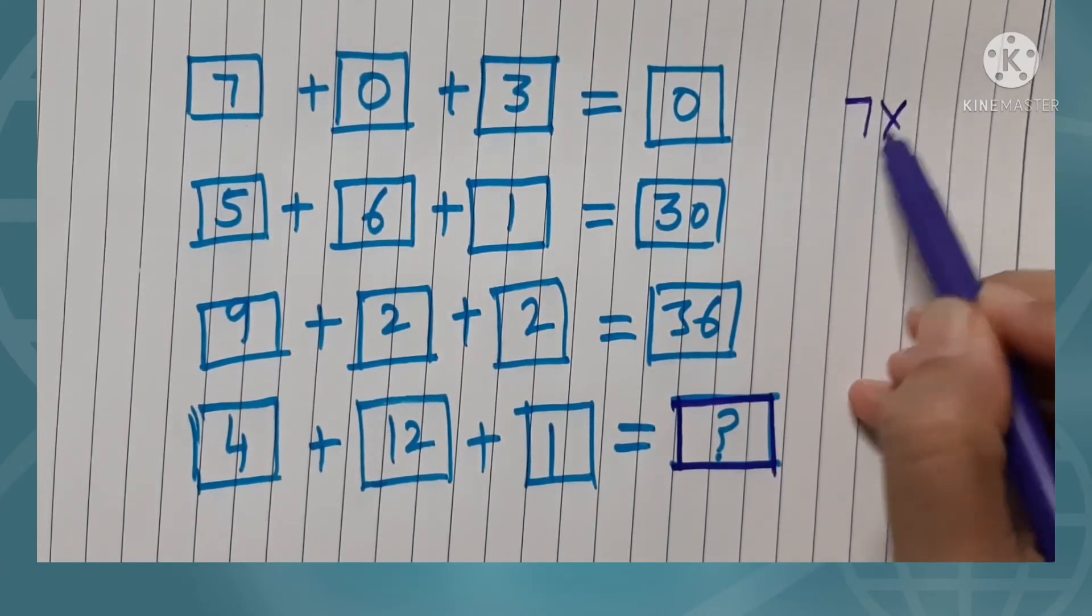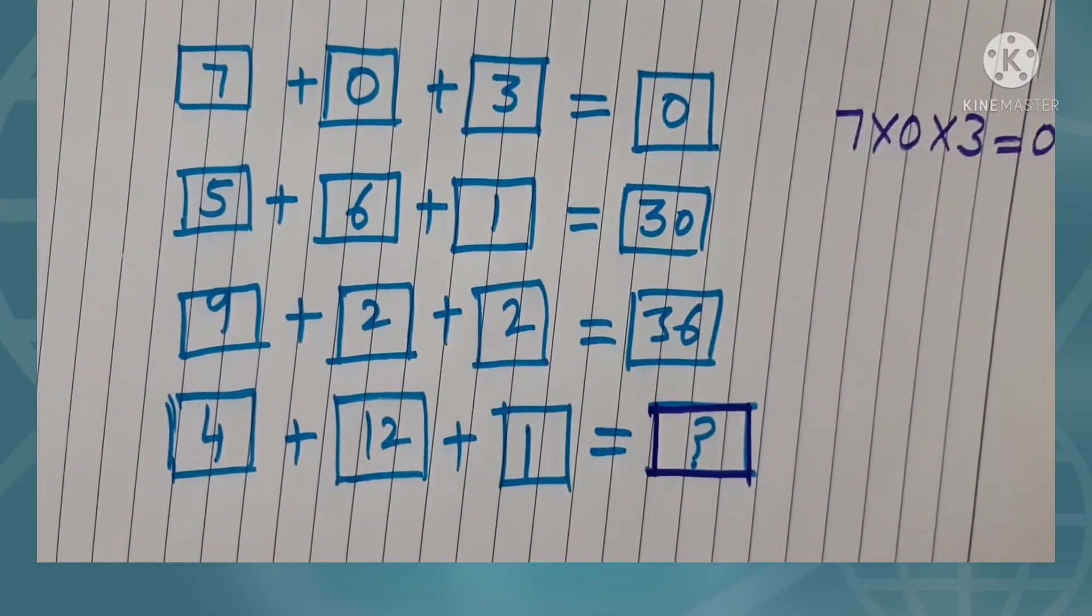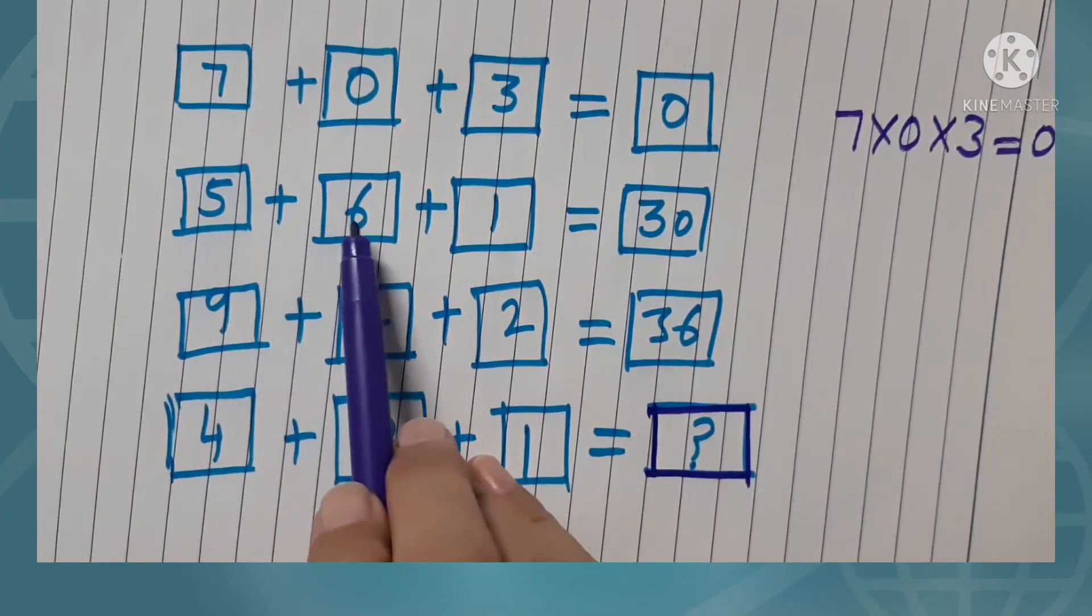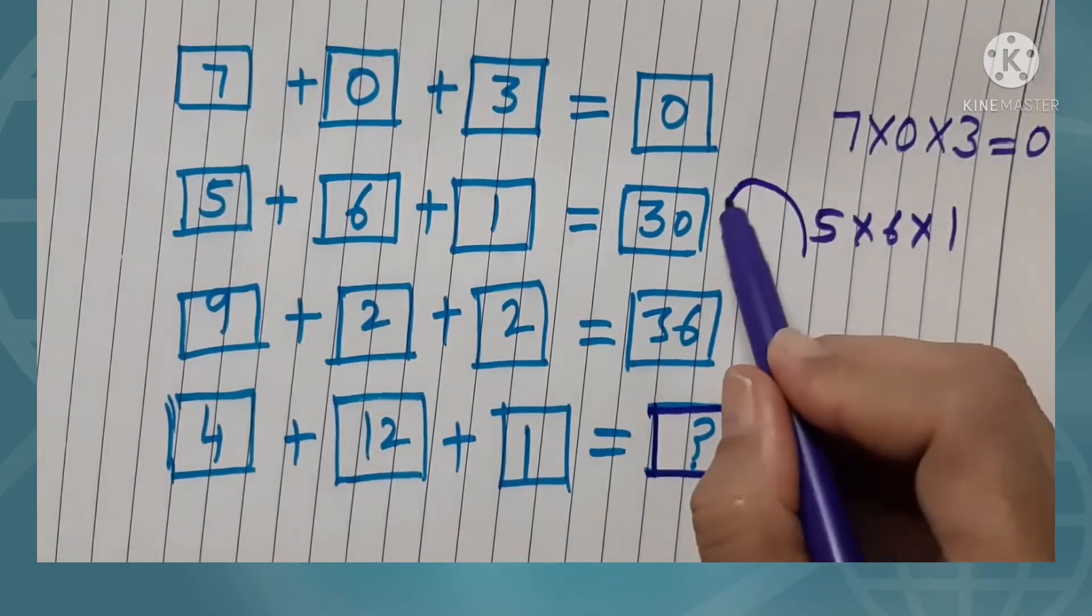Observe carefully the second row. 5 into 6 into 1, yes, we get 30.